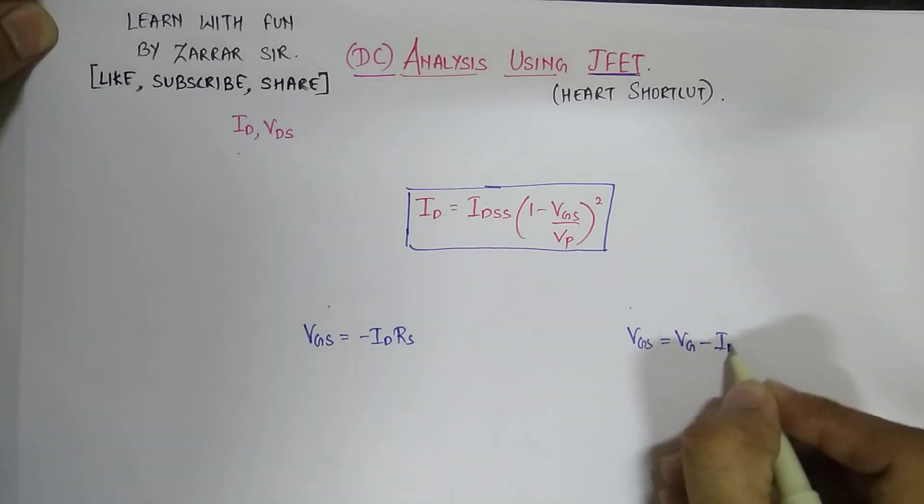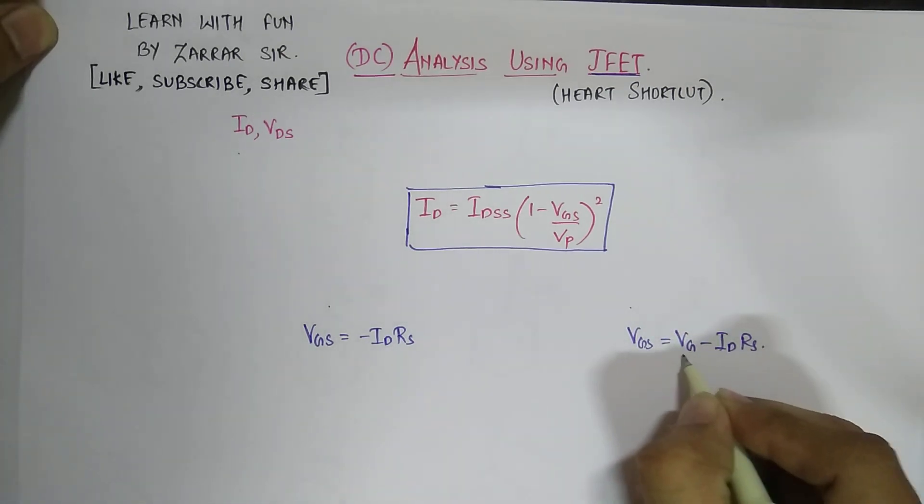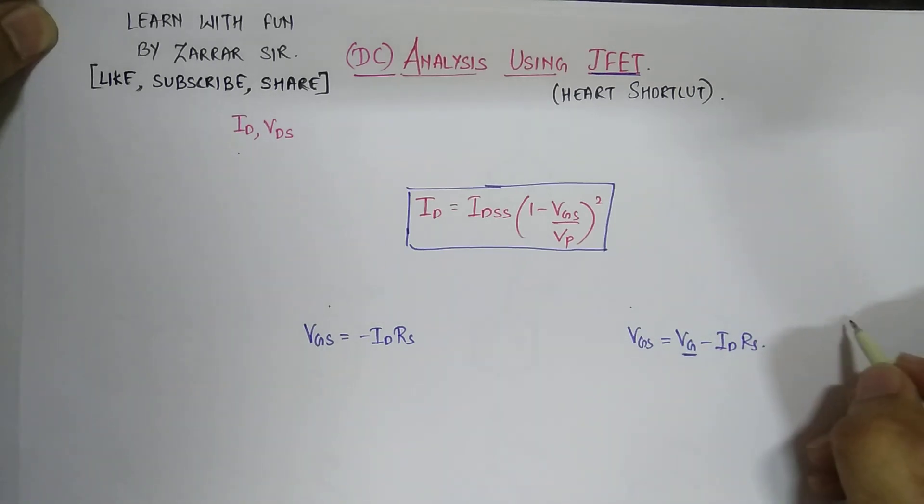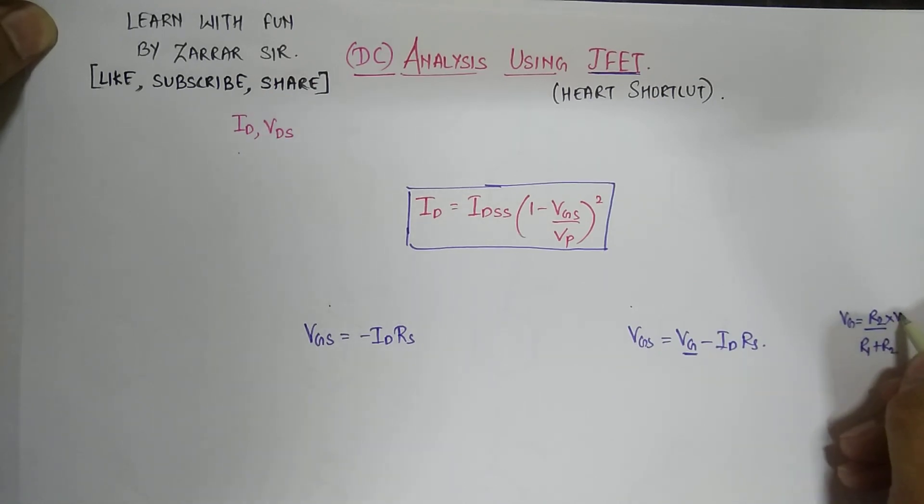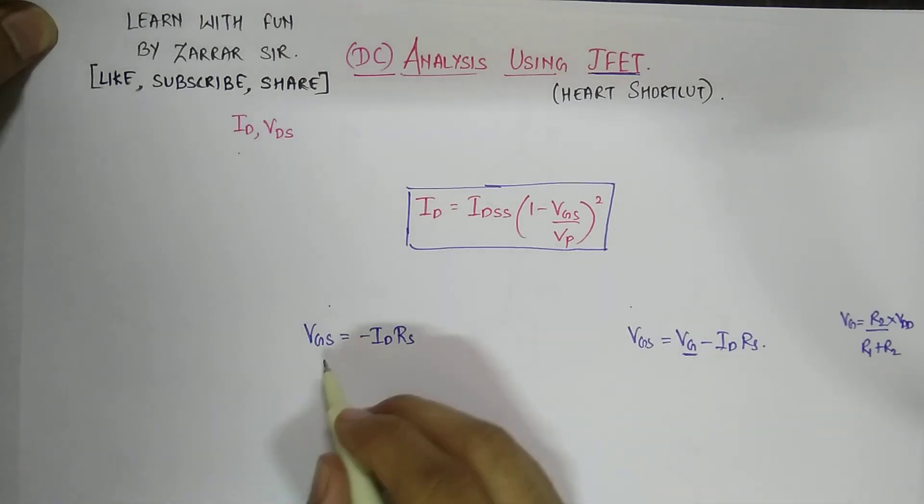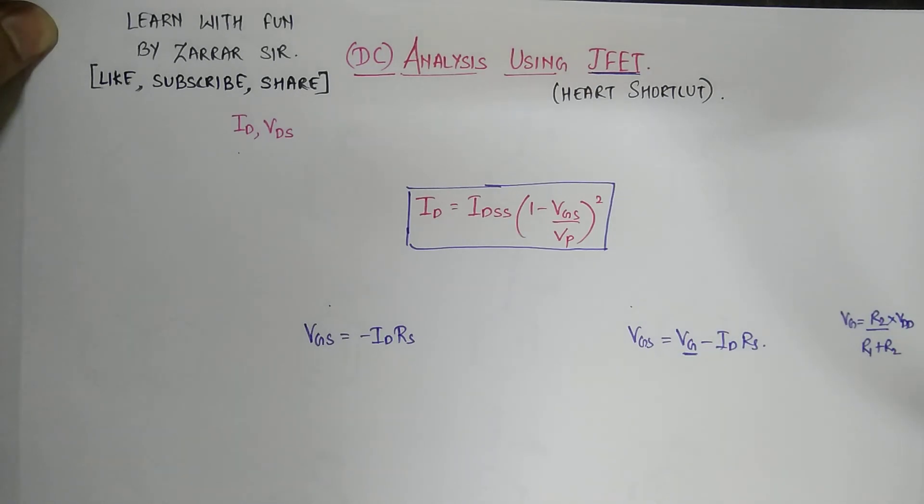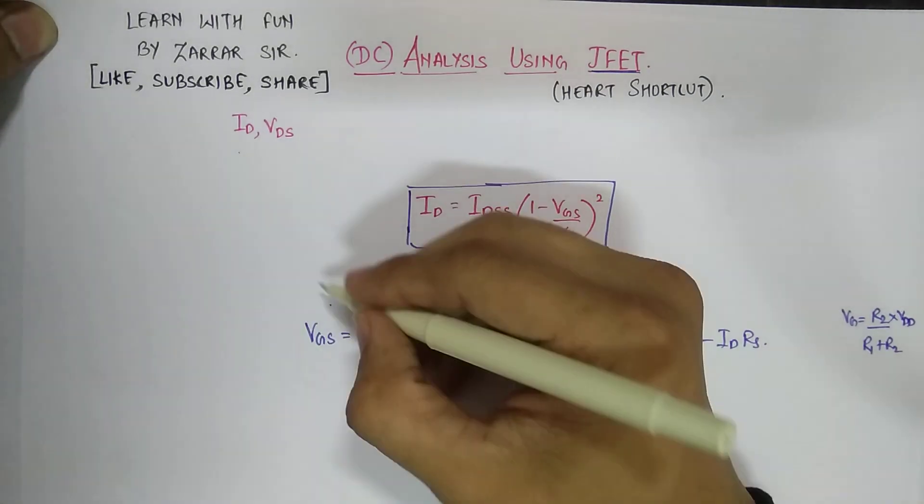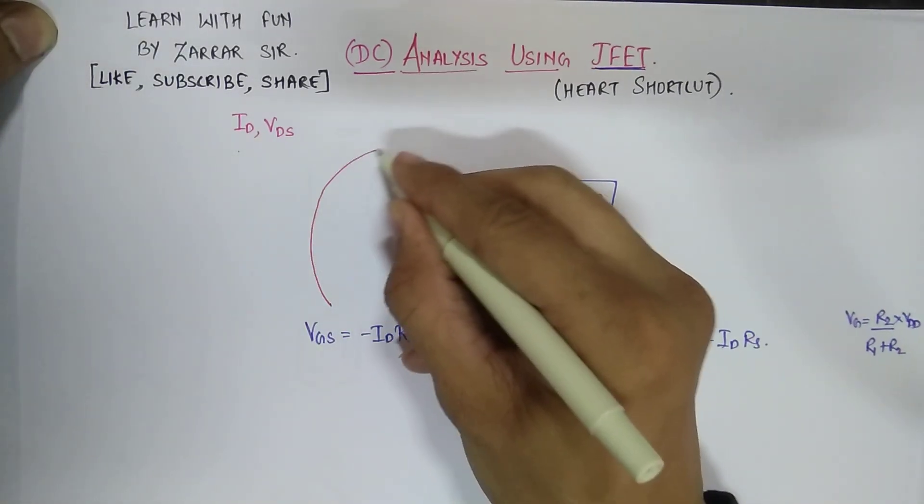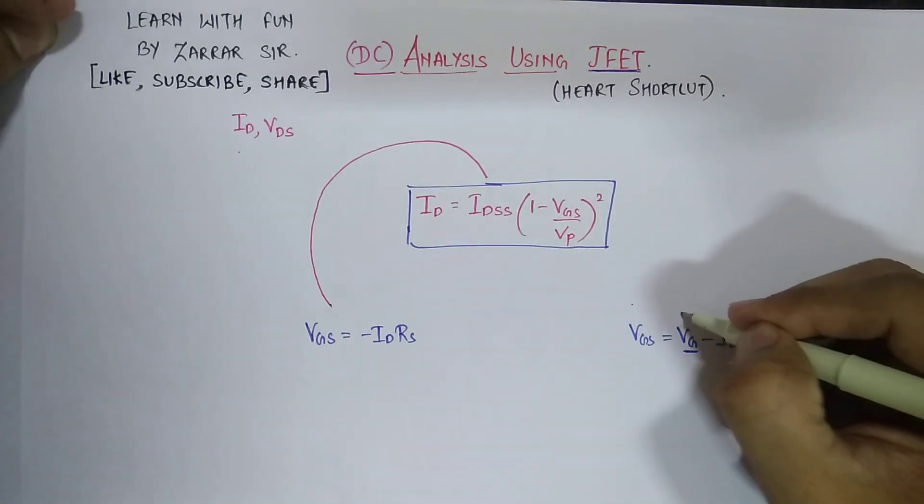VG minus ID times RS, where VG is calculated as R2 upon (R1 plus R2) into VDD. Once you get VGS, this voltage, you will substitute this VGS back in the ID equation.